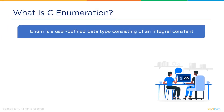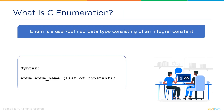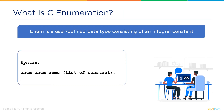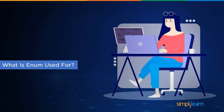Enum is a user-defined data type consisting of an integral constant. In short, enum is a keyword that allows a user-defined data type consisting of a set of integral constants. The syntax is: enum, followed by the enum name, and a list of constants separated with the help of the comma operator.